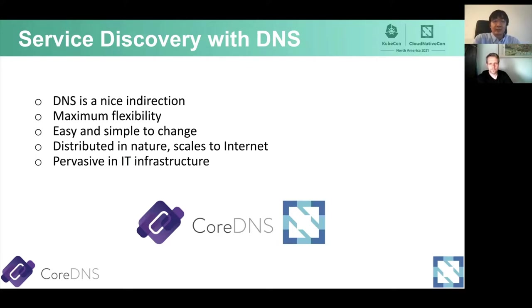I'm going to discuss a little bit about service discovery and CoreDNS. As many of you know, in this day and age, you have SDN which can give you all kinds of networking capabilities. With SDN, you can assign any endpoint to any IP address as needed. So some people ask: is DNS still needed? There are several reasons DNS is important. First, DNS provides indirection, which is a property you probably want when deploying a production system. This indirection gives you maximum flexibility and is easy and simple to change.